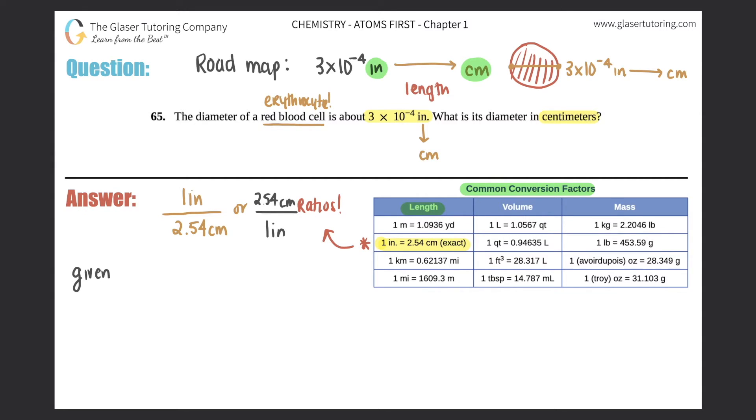So you always have to start with what you're given, and the given here was 3 × 10⁻⁴ inches. Now remember, with converting, you always multiply by a ratio and you always put the inches on the bottom. If I'm going too fast for you, go back to the past couple questions—I go much slower there so you can understand fully.